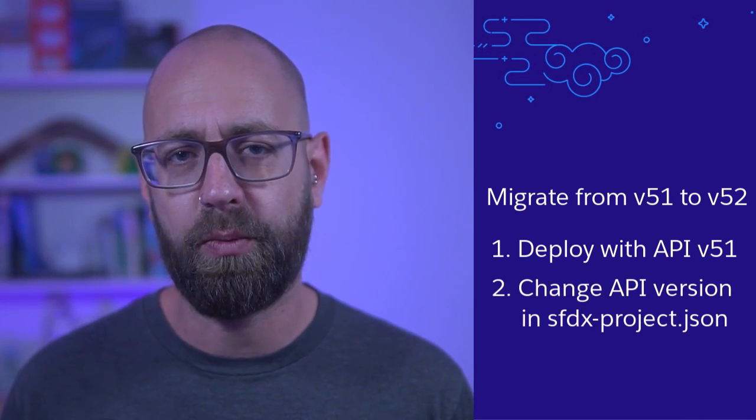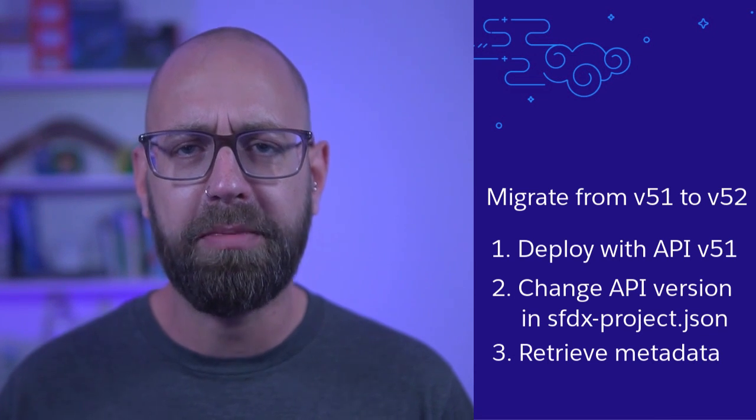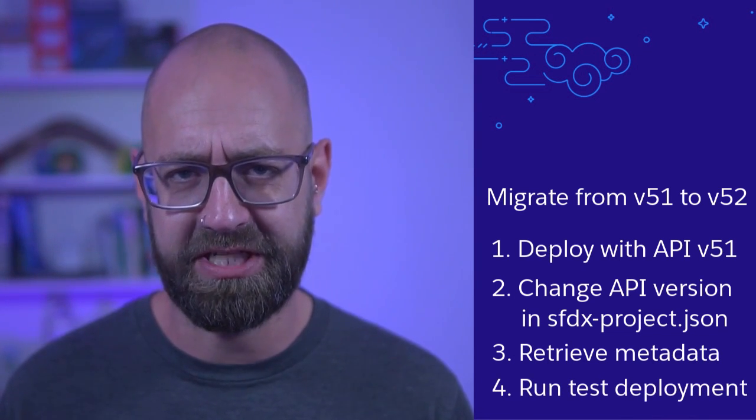The experience model is not perfect yet, especially when there are release updates. Let's say your experience model is on API version 51, so Spring 21, and you wanted to use your metadata in a later API version, say 52. These are the steps I recommend: First, deploy your experience model to an environment using the API version your project currently has, which is 51 — you can set this in the sfdxproject.json file of your DX project. Then change the API version to 52 and retrieve the metadata. During the retrieval process, new or changed keys are automatically added to your Experience Bundle. As a last step, I recommend running a test deploy of the just-retrieved metadata, because sometimes not every key that you need for a deployment is part of the retrieved metadata yet.